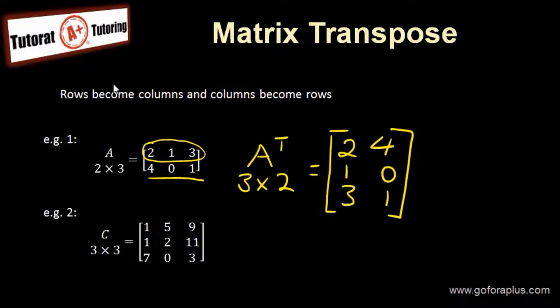Next example is a square matrix. It's matrix C, 3 by 3. So C transpose is still 3 by 3.